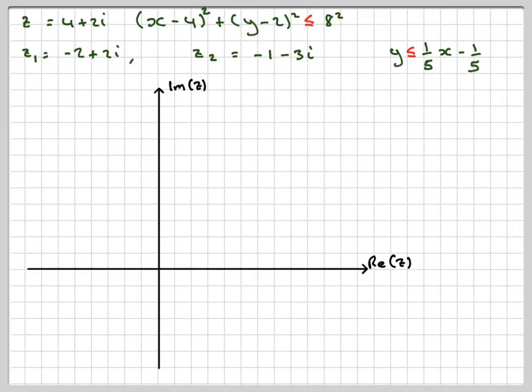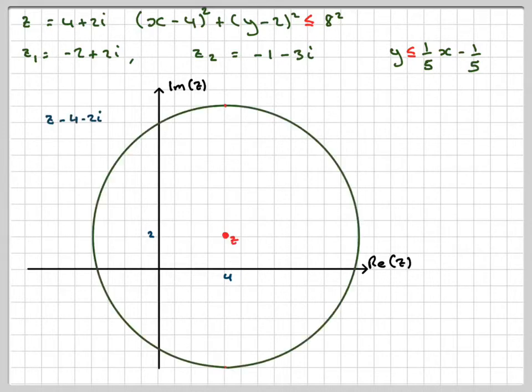So, nice large axis. We'll need to mark on the point (4, 2), that's the point 4 + 2i, and then we need to draw a circle around that point with radius 8.